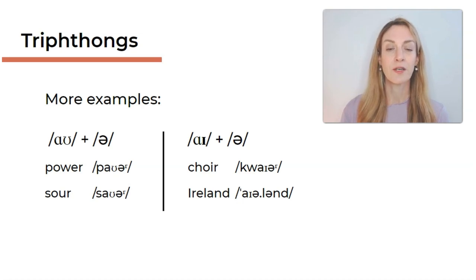And then same for choir and Ireland. We have aɪ plus schwa. And again here in choir, there is no dot, no period mark to show a syllable boundary because this word is really just one syllable. And then Ireland of course has two syllables, aɪ and then lənd. But within the first syllable you have the triphthong, aɪ plus the schwa together.